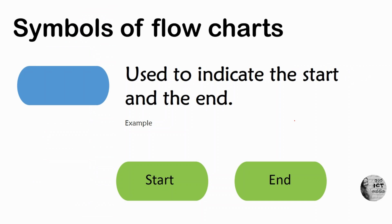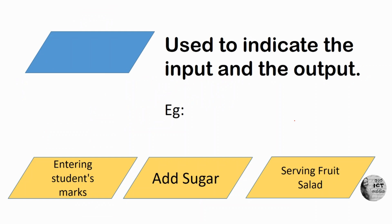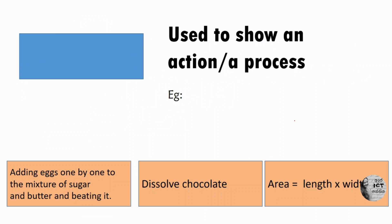This is the oval shape — some also use a circle shape. It is used to indicate Start and End. Then this is the rhombus shape, which we use to indicate both inputs and outputs — for example: add sugar, enter stored marks, serve food salad. Then this is the rectangle shape, used to show an action or a process — within the rectangle we include what actions are performed.